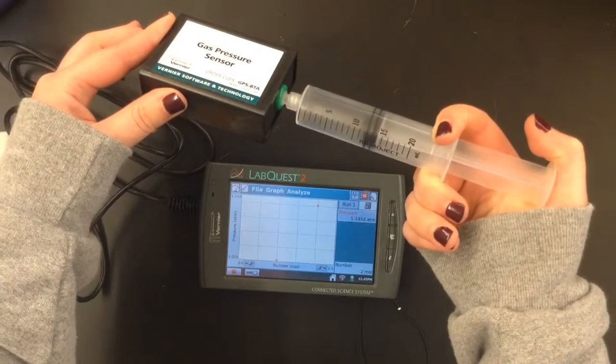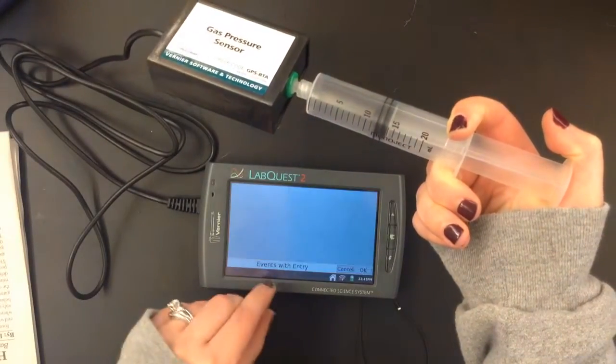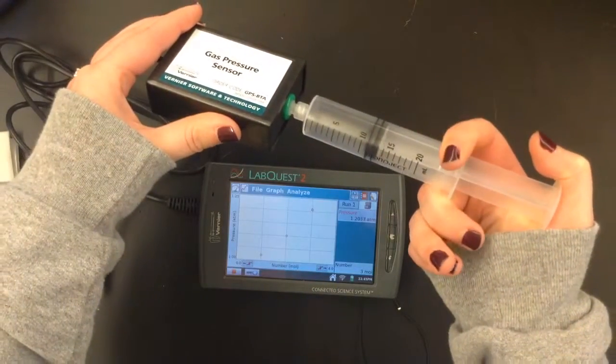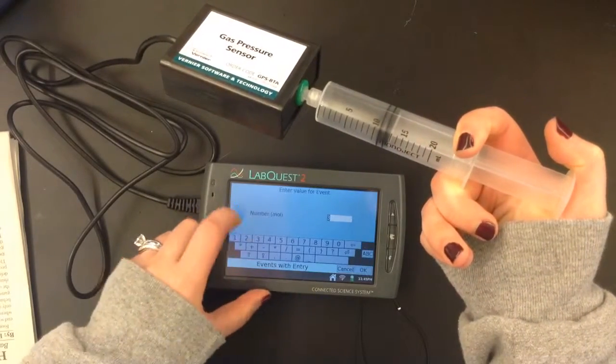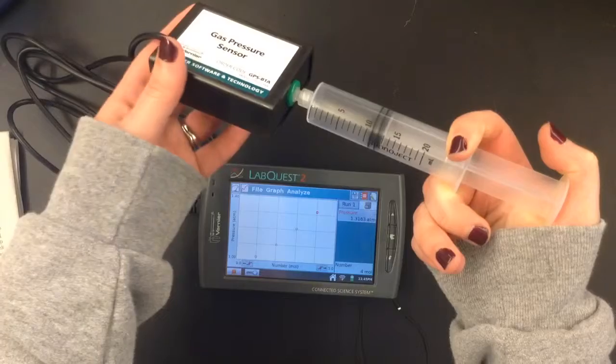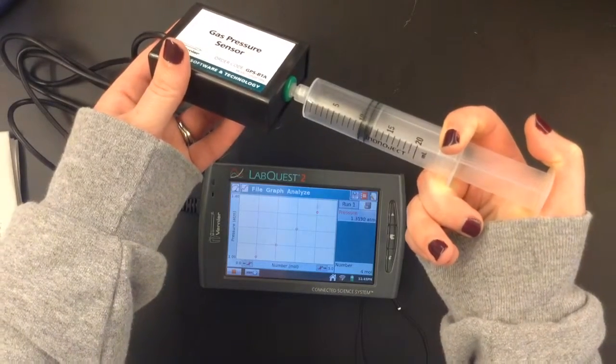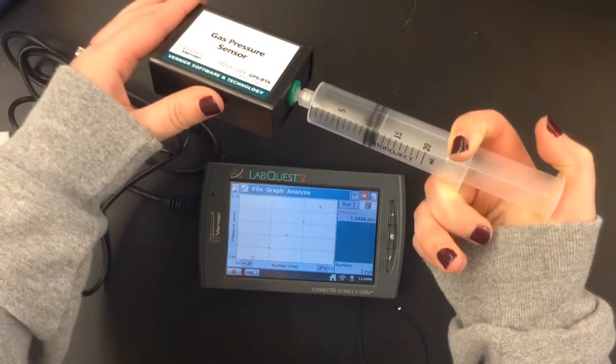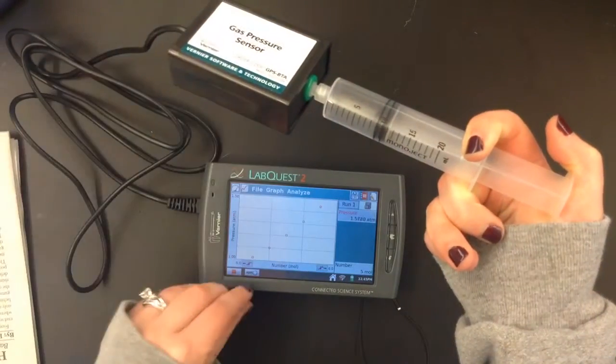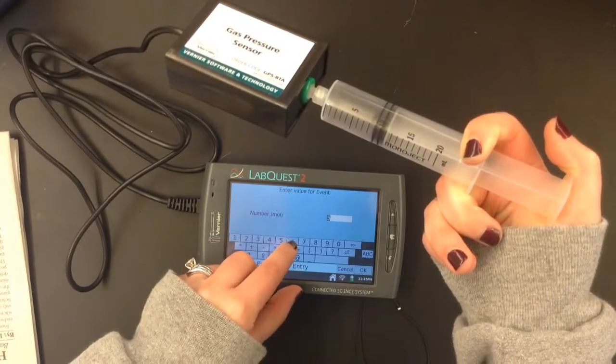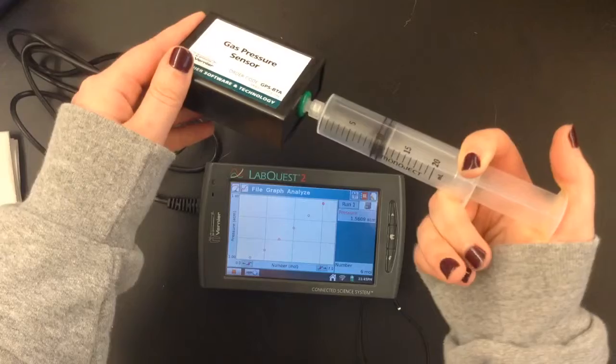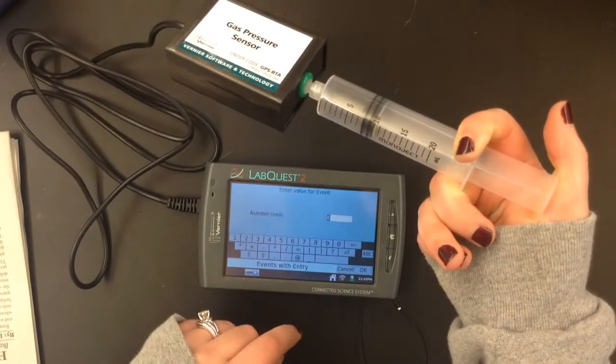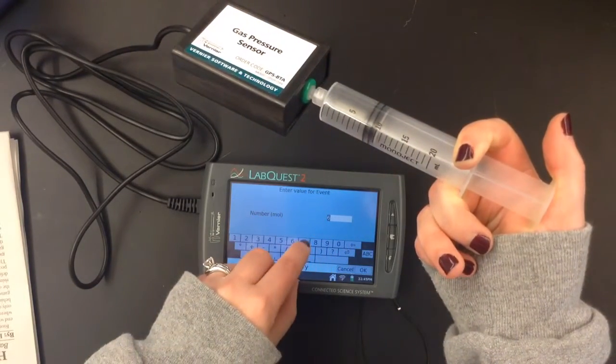And then I'm going to keep going. 13 down to 12. So now I've added 3. And then 12 down to 11. Now I've added 4. And then down to 10. Now I've gone from 15 to 10, so I've added 5. Then I'm going to go down to 9. Now I've added 6 moles of gas. And then I'm going to go down to 8. So I've gone from 15 to 8, so I've added 7 moles of gas.